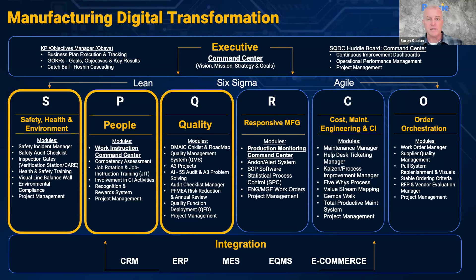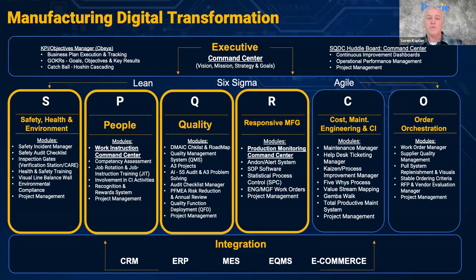Of course, you've got quality. Quality is so fundamental to manufacturing. You've got all the DMAIC checklists and roadmaps, quality management systems, A3 project management, and quality function deployment. You want to make sure all of that is digitized as well. And when it comes to Six Sigma — especially responsive manufacturing, production monitoring, alert systems, and standard operating procedures — are all those digitized?